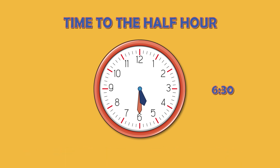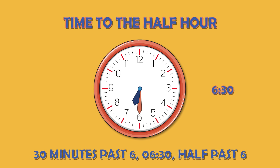6:30 is a little bit tricky, because there's 6 o'clock straight up — 6 o'clock — and half past that would be halfway between 6 and 7. So our hour hand goes halfway between, and the minute hand is on the 30. So 6:30. We could say 30 minutes past 6, 6:30, or half past 6.